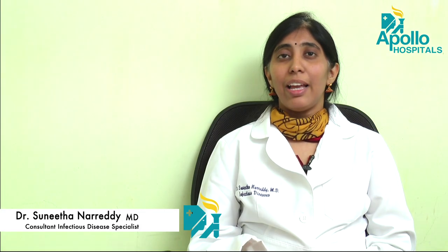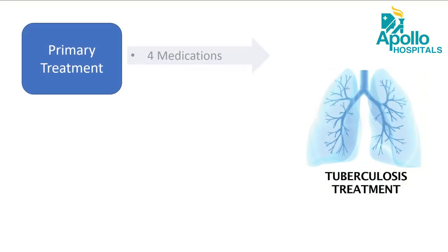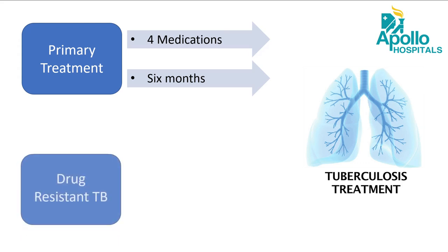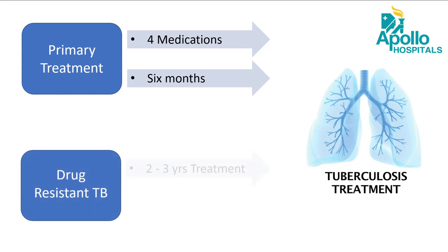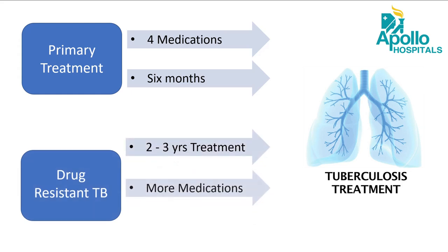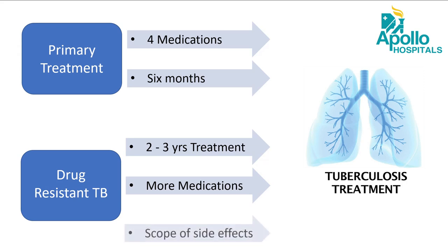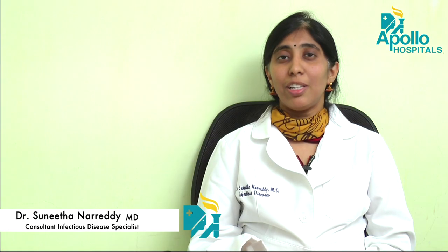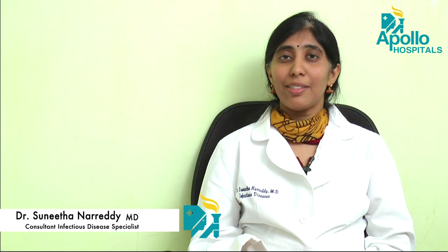Treatment for tuberculosis involves taking a minimum of four medications for a minimum of six months. If this treatment is not adhered to, there is a risk of development of drug resistance. If there is drug resistance, the treatment is prolonged to up to two years with multiple medications including injections — a very complicated treatment associated with more side effects. So it is advisable to take the medications properly in the first place to prevent the development of drug resistance.